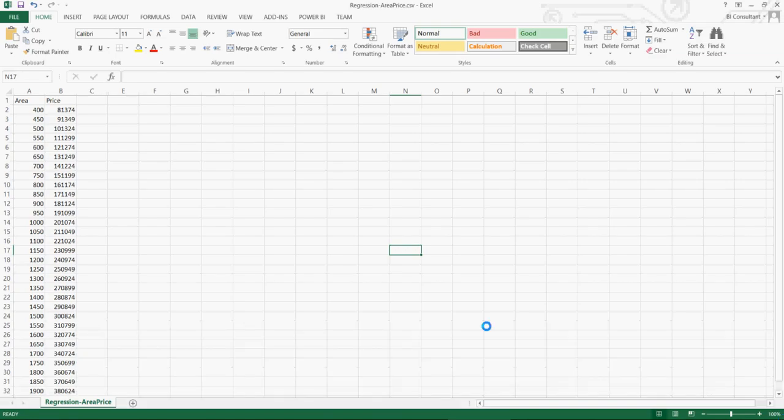But before doing that, let's take a look at the data. The data is very simple. You have area, which is your feature, and price is my predicted value, my target value. So based on the area, I want to predict the price.